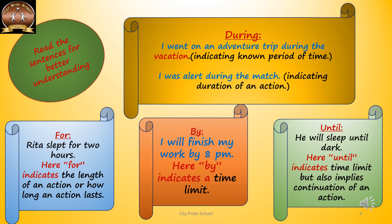We can also see different prepositions of time: during, for, by, and until. 'During' — I went on an adventure trip during the vacation. It indicates a known period of time, already planned. I was alert during the match — it shows the duration of that action. 'For' — Rita slept for 2 hours. It shows the length of the action, how long Rita slept. 'By' — I will finish my work by 8 pm. 'By' indicates a time limit. 'Until' — he will sleep until dark. It also indicates a time limit but also implies the continuation of the action.